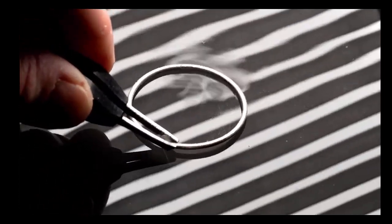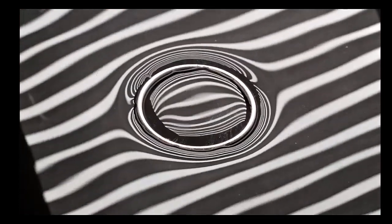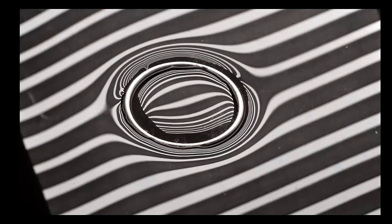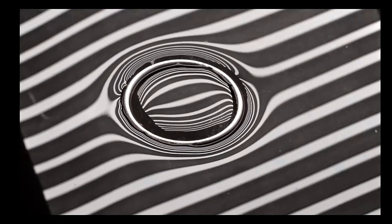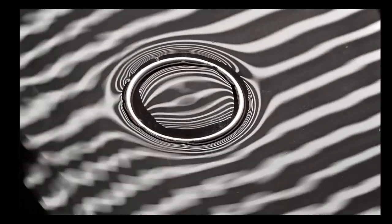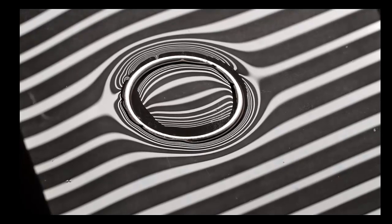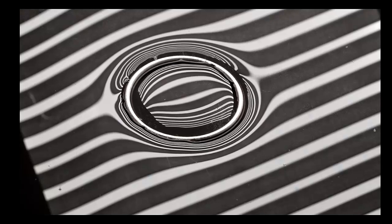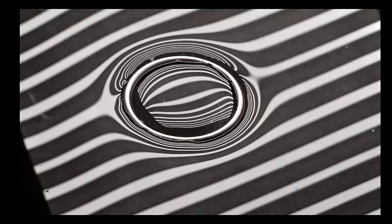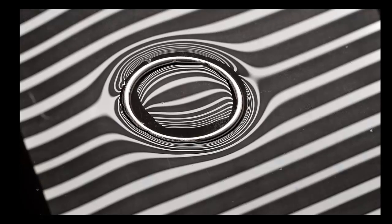But here's the identical ring, but coated with a super hydrophobic coating. And you can see that the same ring floats easily. I've set this up with a set of reflected straight lines so you can see the meniscus around the ring from the optical distortions of the straight lines.